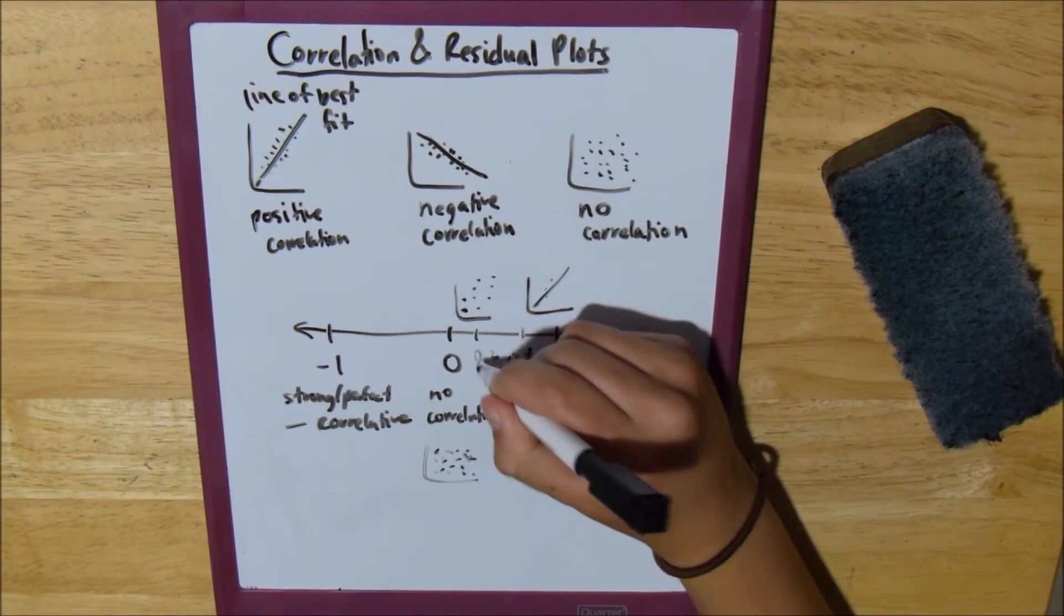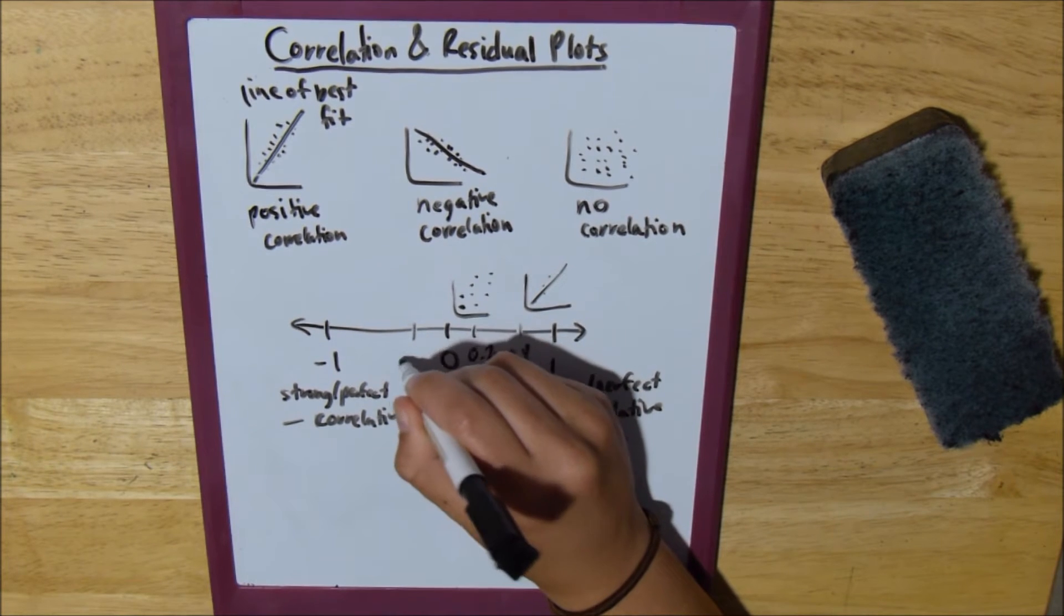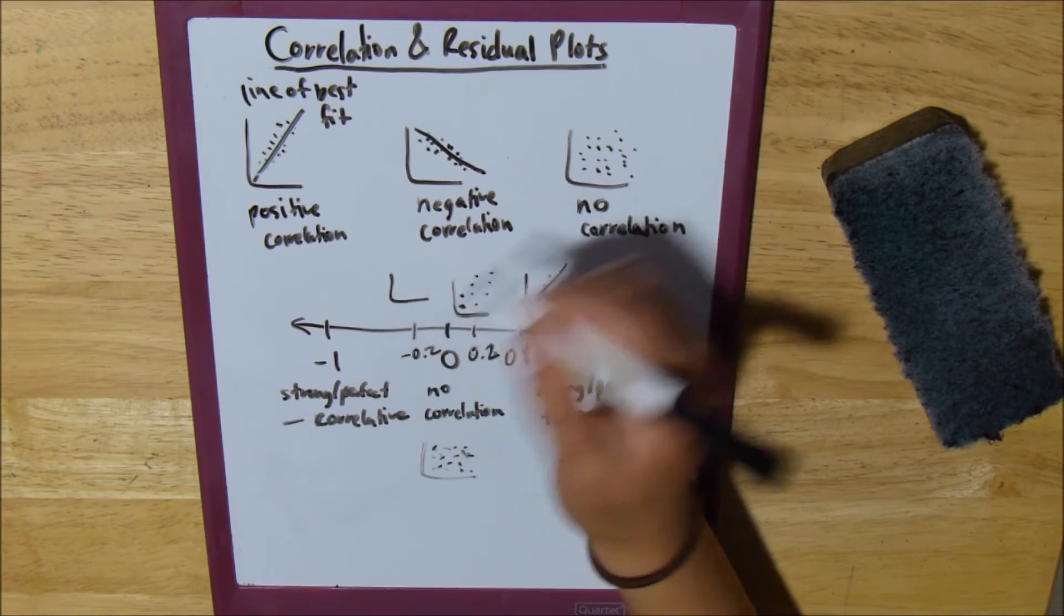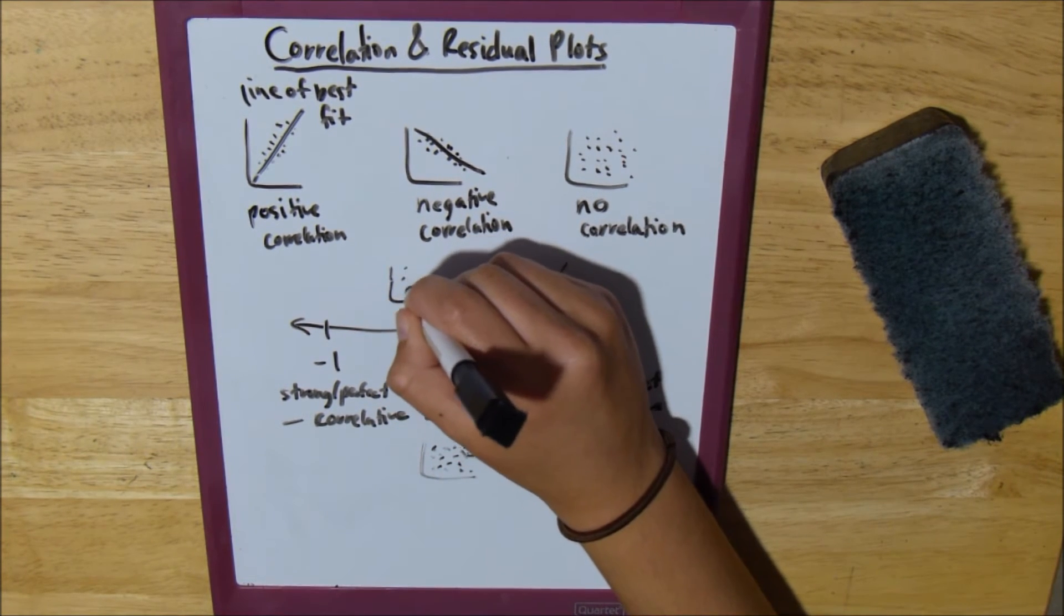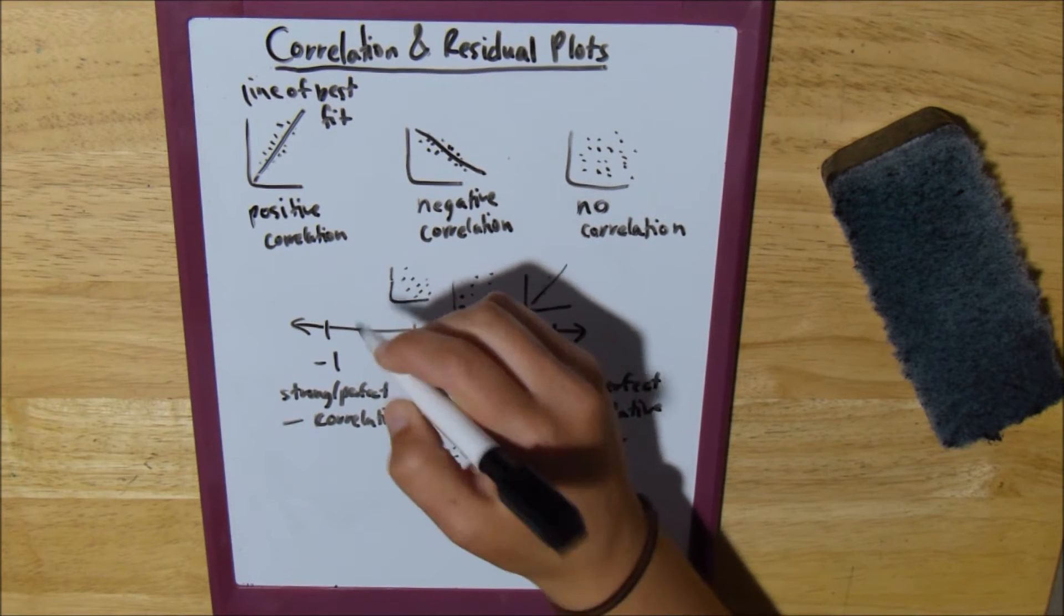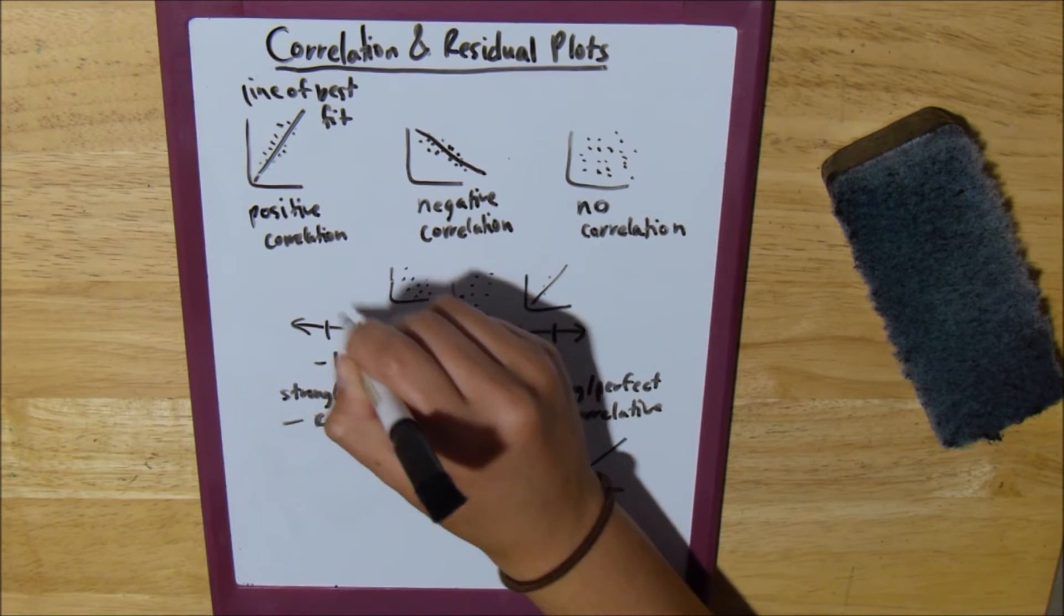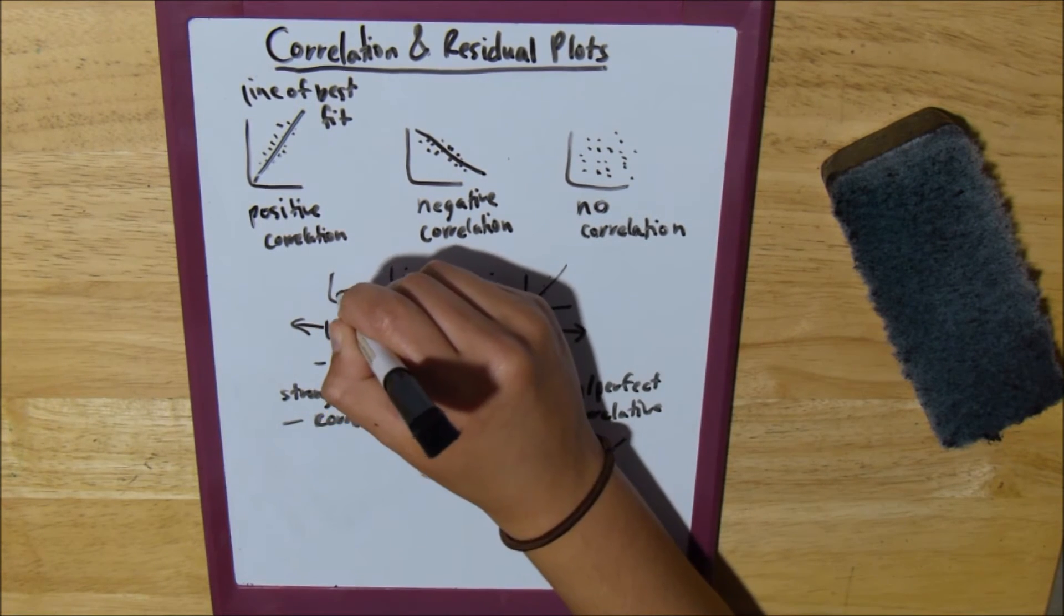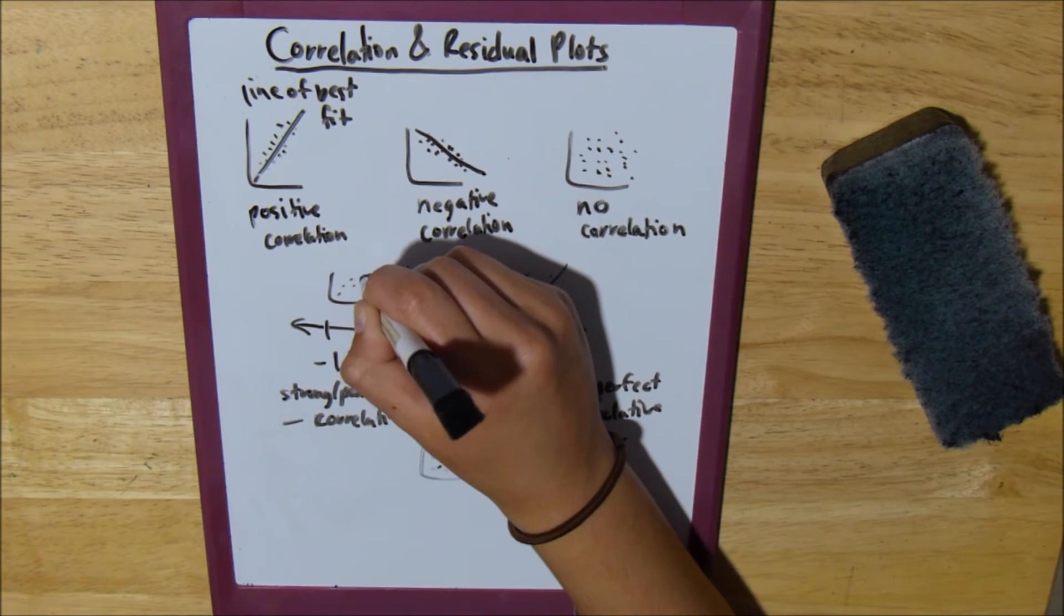The same goes for your negative. So let's say you have negative 0.2, it's doing the same thing, just going negatively. Then we have negative 0.8, and the points are closer together, say something like that.